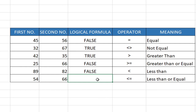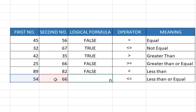Our last one is less than or equal to. Bring equals sign, select the first number, then less than or equal to, and select the last number. Hit Enter and it's going to say true, because 54 is less than 66. So basically this is how to use the logical test in Excel.